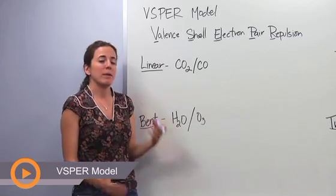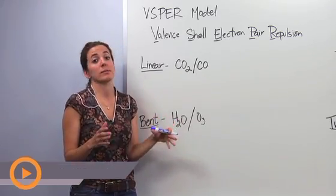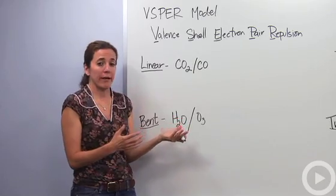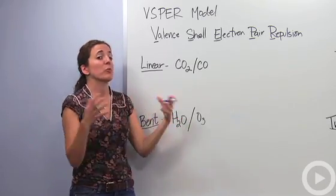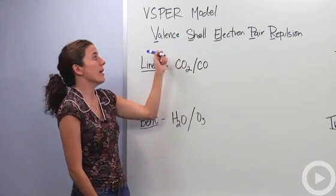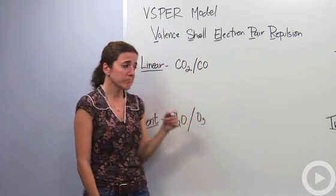We're going to talk about VSEPR models, basically the shapes that covalent compounds take form of when they come together. We've drawn those dot diagrams, now we're going to take them and make them three-dimensional models and what they actually look like in space. We're going to call that VSEPR, valence shell electron pair repulsion.